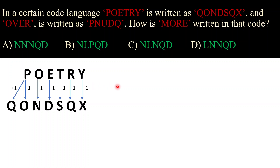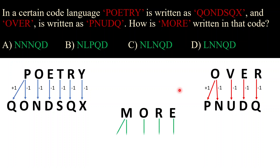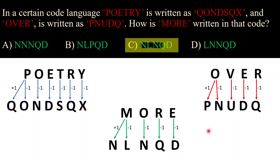The same approach is applied to code 'over': first letter O plus one, second letter O minus one, then V minus one, E minus one, and R minus one. Now applying the same approach to code 'more': M plus one, M minus one, O minus one, R minus one, and E minus one. So the code comes to be N L N Q D — our answer is option C: NLNQD.